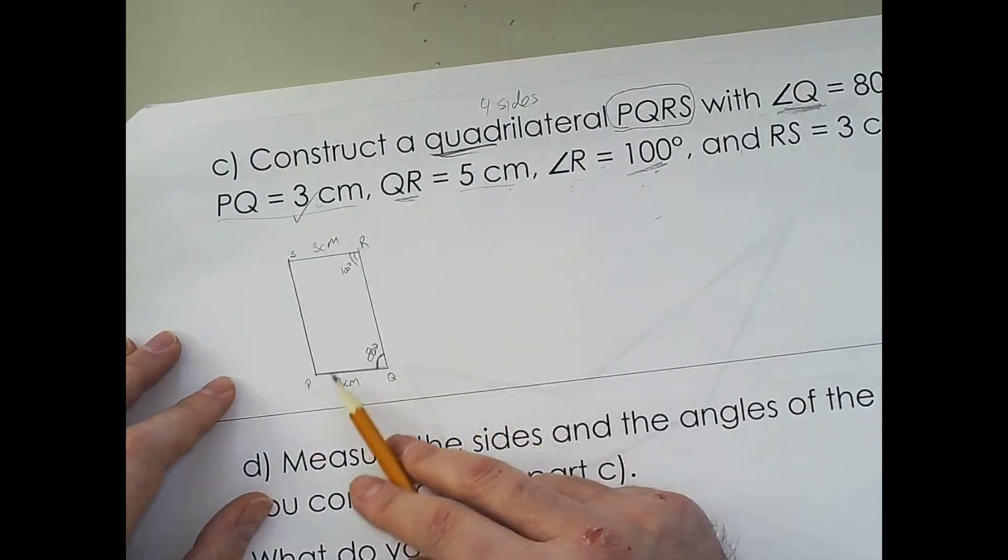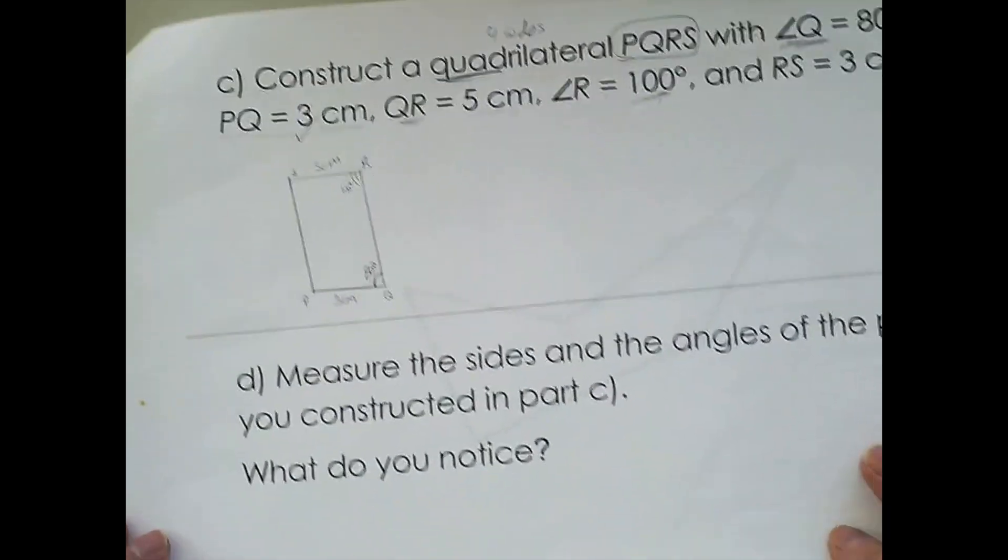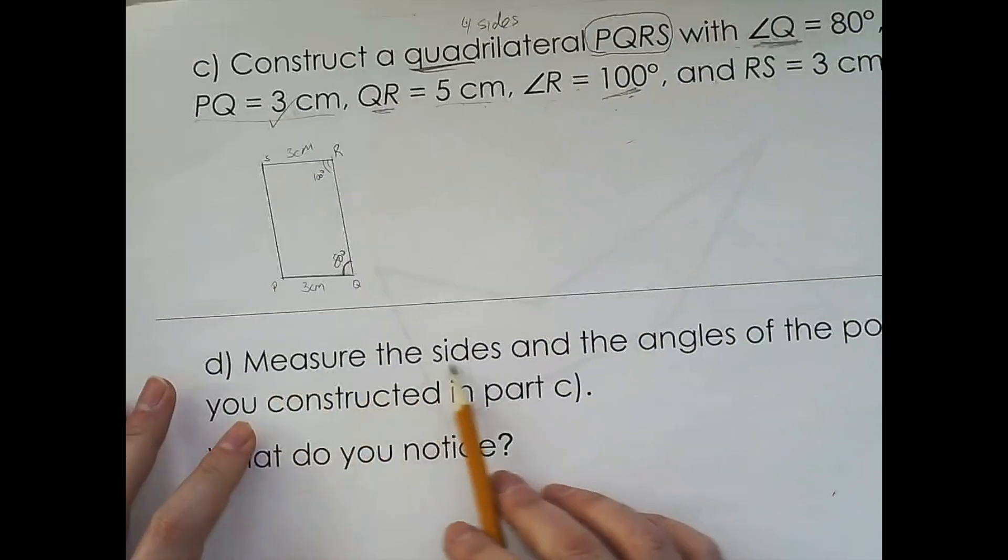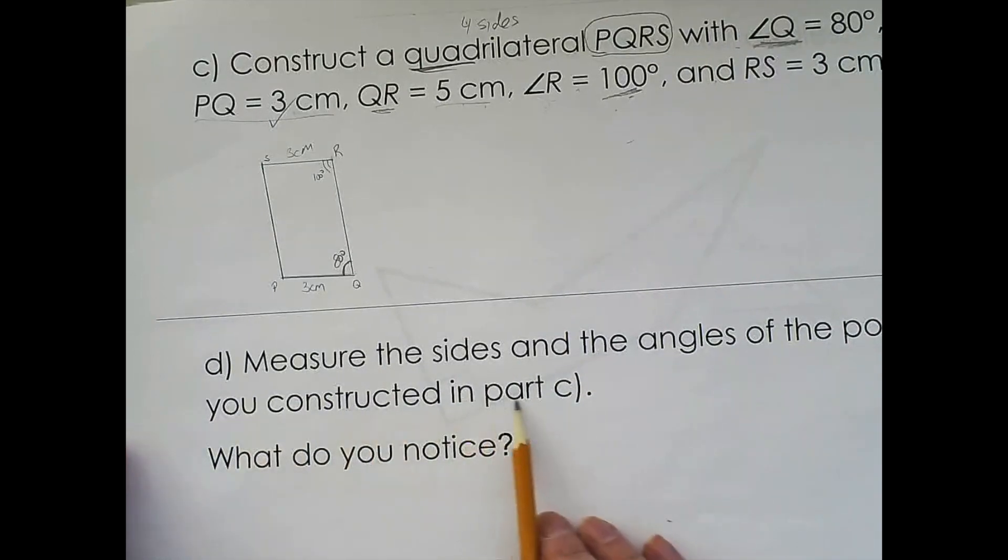So now if we look at the other angles inside, which is the bottom part here, it's basically telling us what to do. Measure the sides and angles of the polygon you constructed in part C.